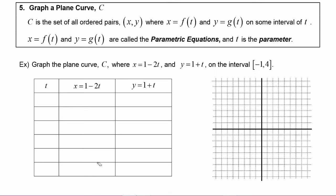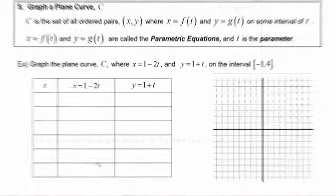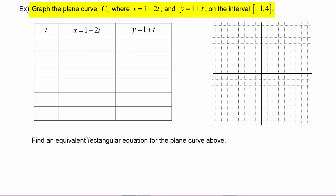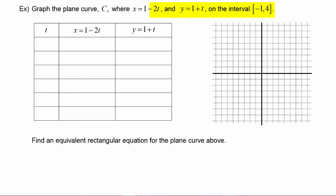So let's see how this works. In this example we have to graph the plane curve C, where x is equal to 1 minus 2t and y is equal to 1 plus t on the interval negative 1 to 4. Now when we talk about the interval being negative 1 to 4, this interval is for the t variable.